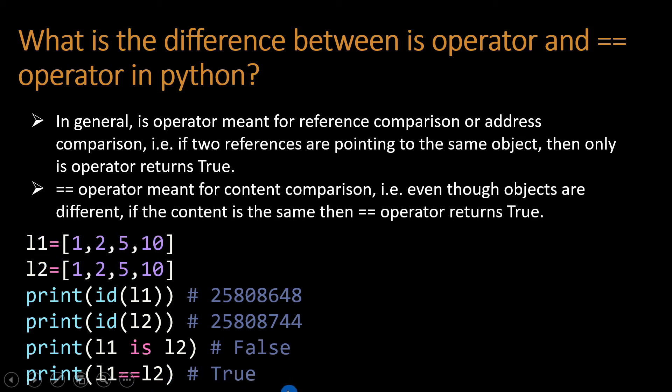Let's see one more example. l1 equals [1, 2, 5, 10] and l3 equals l1, meaning whatever value is in l1, it copies to l3. Now I print id(l3), we got output 13029128.